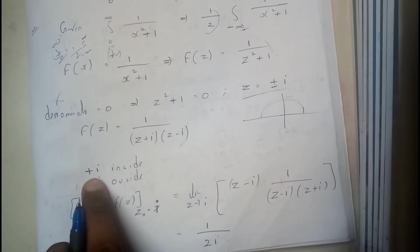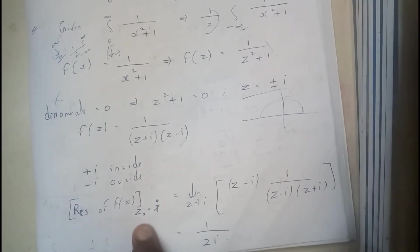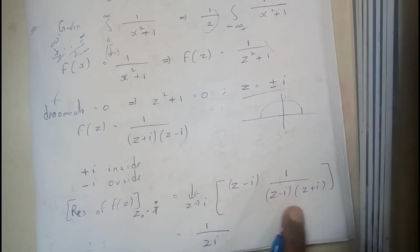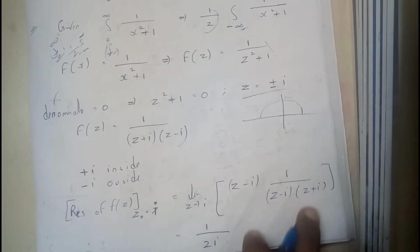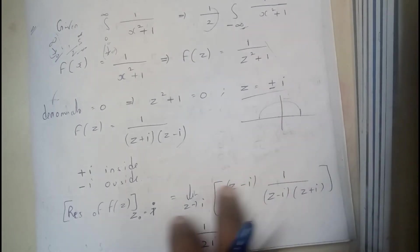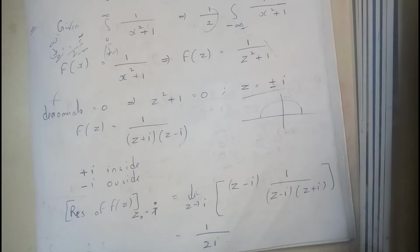So now this plus i is inside and minus i is outside. So residues of f of z, z is equals to plus i is equals to limit z tends to i, z minus i by 1 by z minus i into z plus i. So these two are going to get cancelled. And we will be replacing z with i. So we get 1 by 2i.